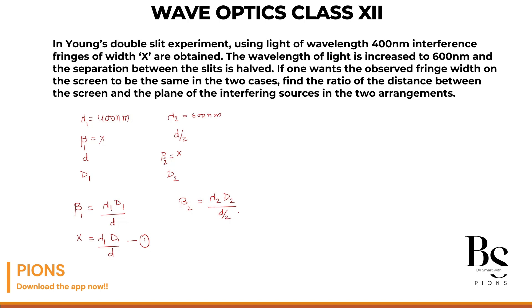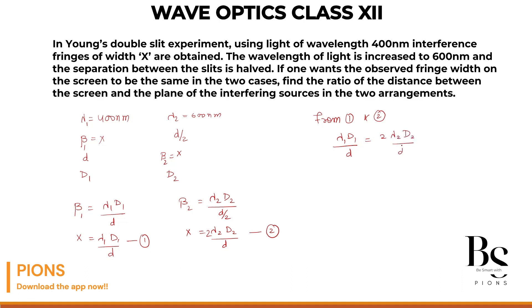Beta 2 is also x, which equals lambda 2 times D2 divided by d/2, so the 2 goes to the numerator — that's equation 2. Since the left-hand sides of equations 1 and 2 are both x, the right-hand sides must be equal. So: lambda 1 times D1 upon d equals 2 times lambda 2 times D2 upon d.